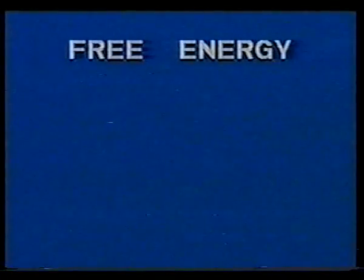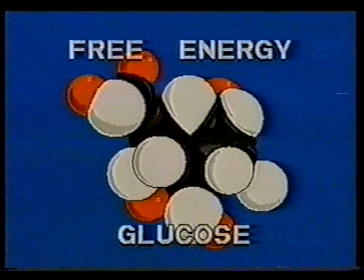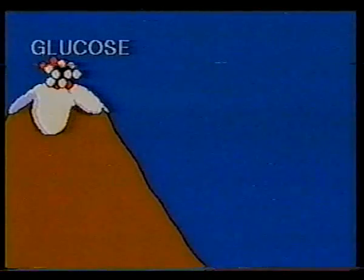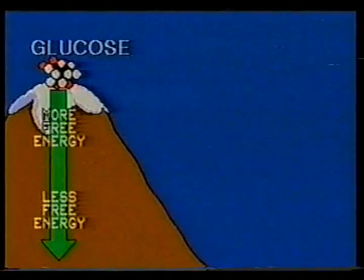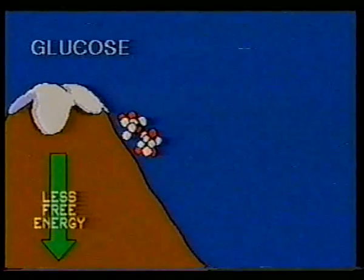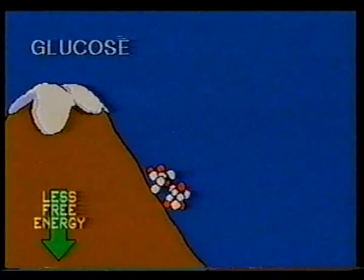Why? Well, life feeds on free energy — that is, energy available to do work. Glucose, for example, is a vital source of free energy. Think of a glucose molecule as a stone perched on top of a hill, where it possesses more energy than the same stone at the bottom. As the glucose rolls down the hill, changing chemical form, it releases energy as heat and transfers energy to other molecules, which fuel life.